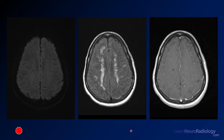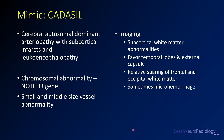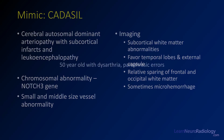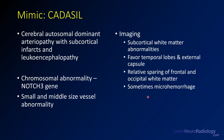This is a mimic called CADASIL — an autosomal dominant arteriopathy. You get subcortical infarcts and a leukoencephalopathy, but rather than being inflammatory, it's associated with a chromosomal abnormality affecting small and medium-sized vessels. In CADASIL, you get white matter abnormalities favoring the temporal lobes and external capsule, with sparing of the frontal and occipital white matter. Hemorrhages can also occur. This is a genetic condition you need to think about when evaluating multiple strokes.